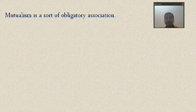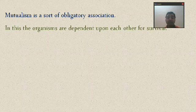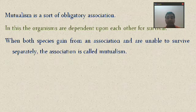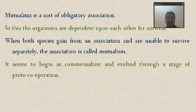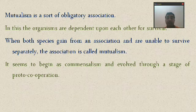So that is proto-cooperation. If the association is obligatory, compulsory, and affects their survival, it is called mutualism. Both species are unable to survive independently. According to scientists, mutualism evolved first from commensalism, then became proto-cooperation, and finally reached the mutualism level.